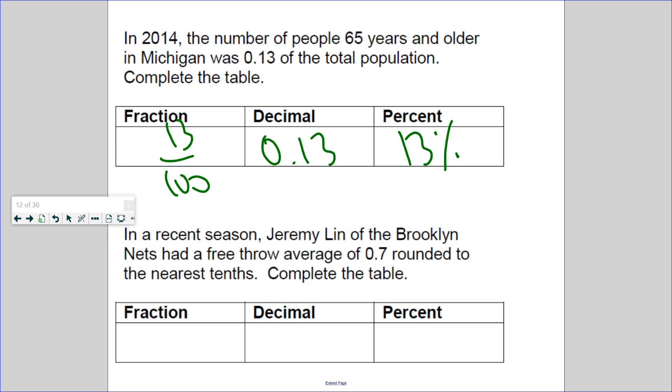In a recent survey, Jeremy Lin of the Brooklyn Nets had a free throw average of 7 tenths rounded to the nearest tenths. Complete the table. So here's the decimal. And how would you write this as a fraction? 7 tenths. And what percent would this be? Please do not say 7. 7 percent is 7 out of 100. If you draw a 10 by 10 grid and you have to shade in 7 of the 10 columns, is that more than half? It's 70 percent. Annex a 0 so you can see it a little better.